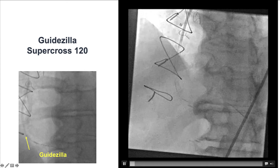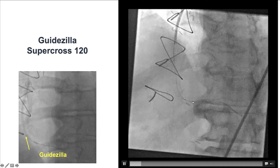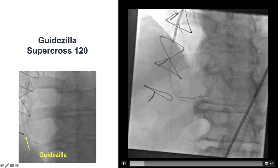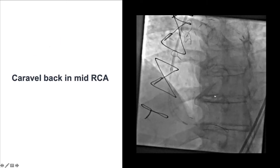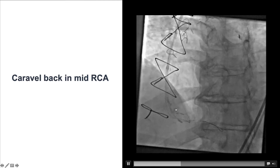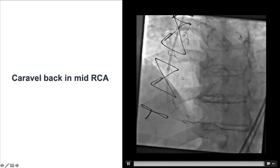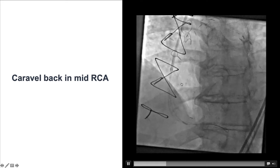The vessel was re-engaged and a guide extension — a Godzilla — was used. This time we also used a Supercross 120 to go retrograde. That was challenging, but eventually with the blocking balloon technique again we were able to advance the Caraval to the mid-right coronary artery. An injection through the mid-RCA revealed the occlusion length was longer than appreciated — occlusion extended from the proximal RCA to the mid-to-distal RCA with heavy calcification.